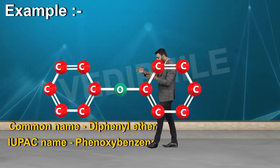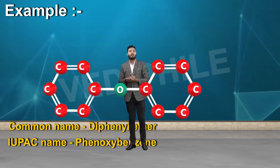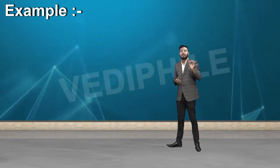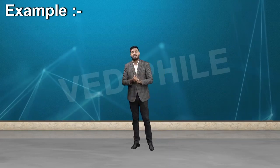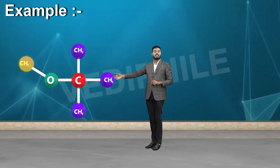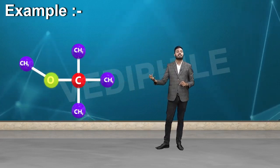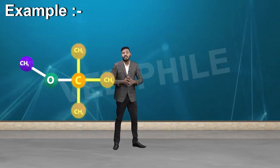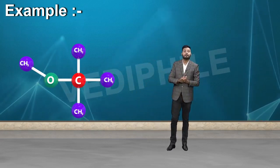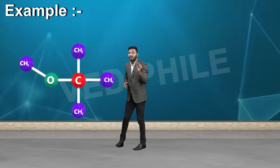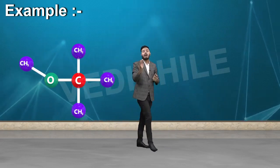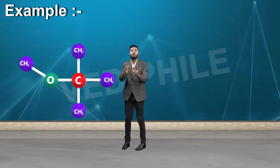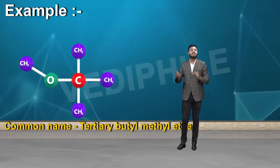यह बात हुई कि दोनों तरफ अगर aryl groups लगे हों तो common name और IUPAC name कैसे लिखते हैं। एक और example लेते हैं: CH3-O-tertiary butyl। इसका common name होगा tertiary butyl methyl ether।